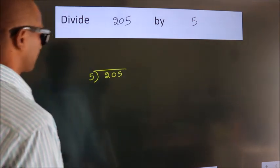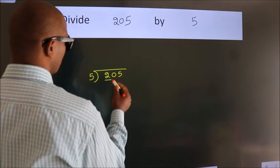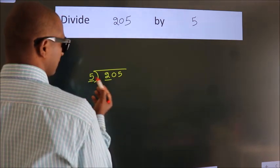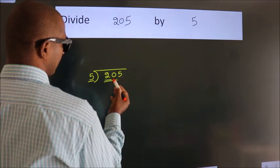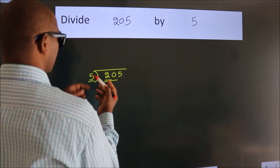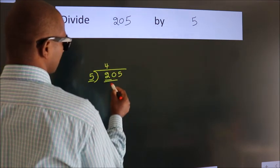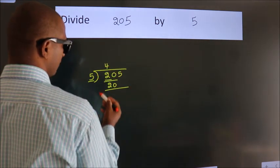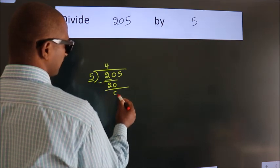Next. Here we have 2, here 5. 2 is smaller than 5, so we should take 2 numbers: 20. When do we get 20? In the 5 times table. 5 fours is 20. Now we should subtract, we get 0.